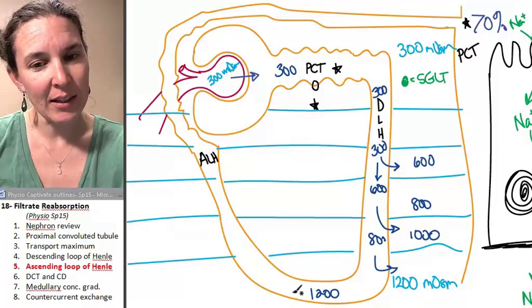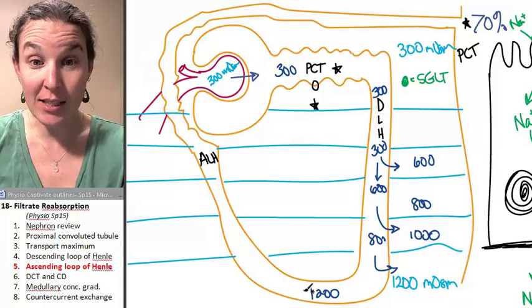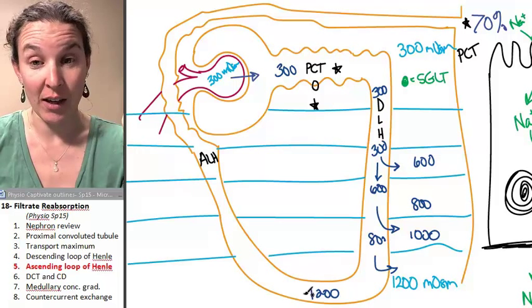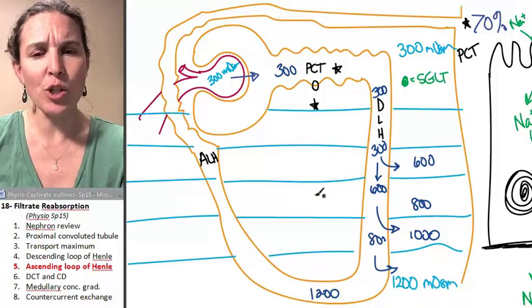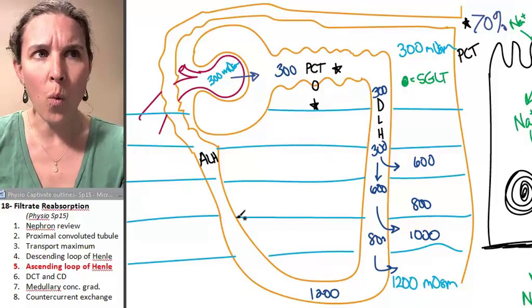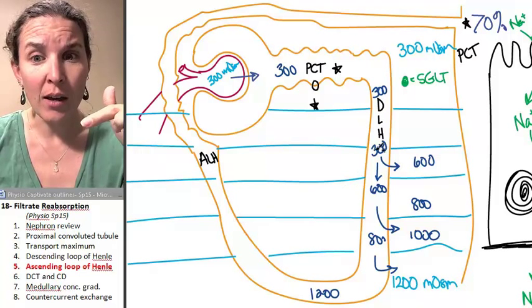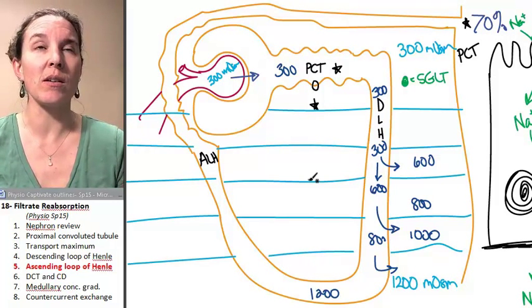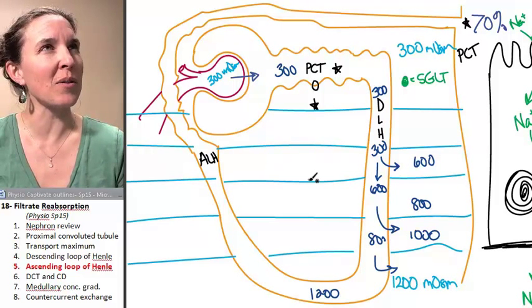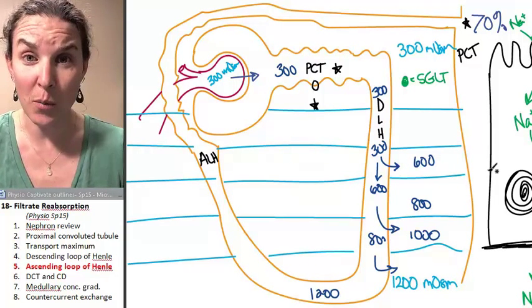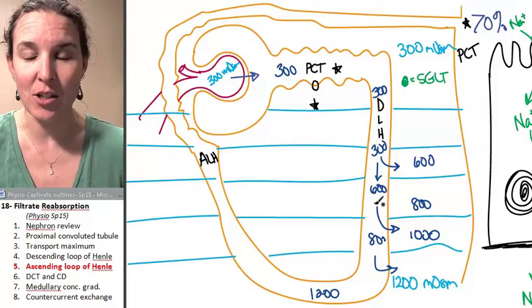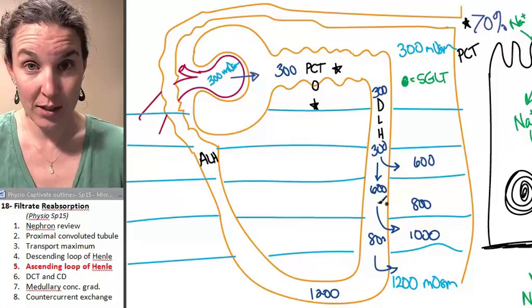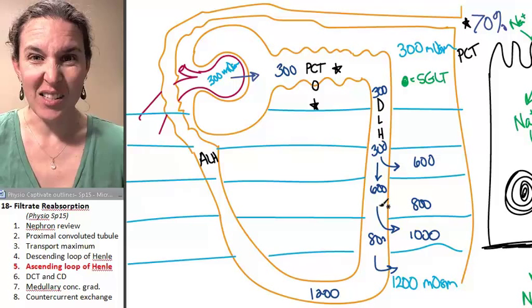If the ascending loop of Henle functioned just like the descending loop of Henle, then basically we would bring the water back into the tubule - there's no name for it because it doesn't happen.